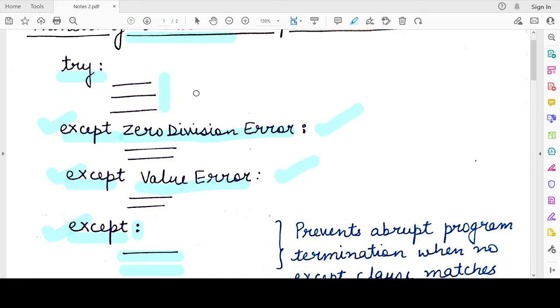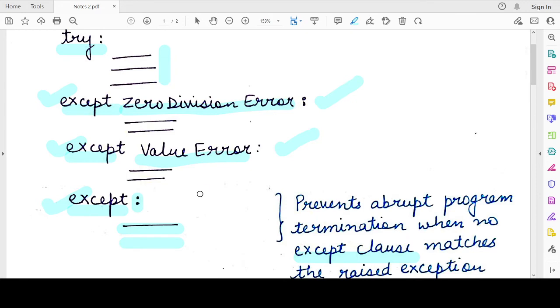And if any other kind of exception is raised in the try block, then the control will directly transfer to the last except block. So this except block that handles all other exceptions will be written after all other except blocks that specify the name of the exception.